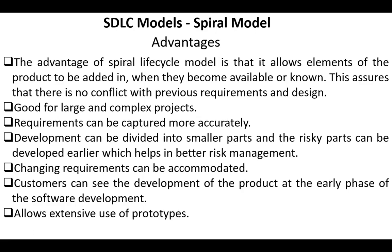The main advantages of the spiral model are: it allows elements of the product to be added when they become available or known, which assures that there is no conflict with the previous requirements and design. It's good for large and complex projects. In this model, requirements can be captured more accurately. Development can be divided into smaller parts and the risky parts can be developed earlier, which helps in better risk management. Changing requirements can be accommodated. Customers can see the development of the product at the early phase of the software development, and the spiral model allows extensive use of prototypes.